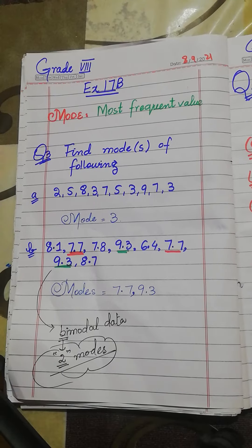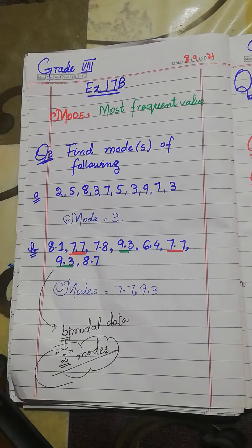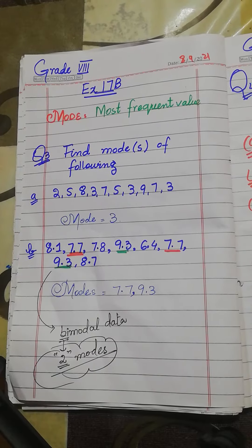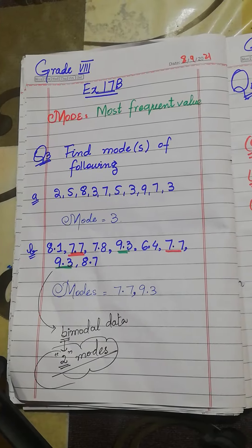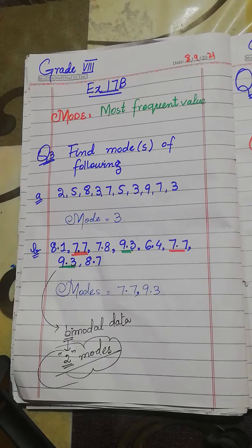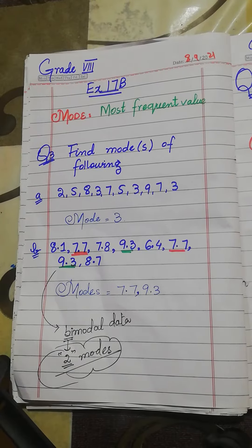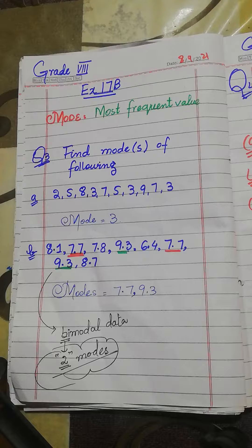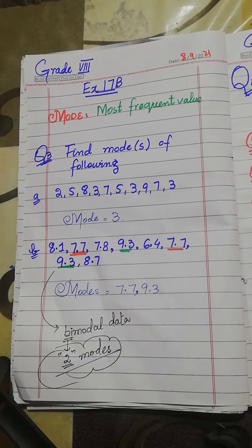Good morning, Grade 8. In SSI 17B we are finding the average — we have already calculated the mean and median. Today we are going to start mode. Mode is the simplest and easiest method.